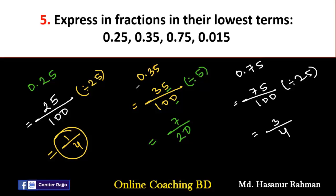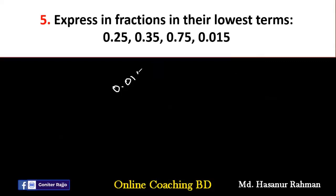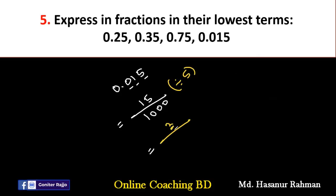And 0.015 — after the decimal point there are three digits, so it will be 15 by 1000. We divide numerator and denominator by 5: 15 by 5 is 3, and 1000 by 5 is 200. So, 3 by 200 is the final answer.